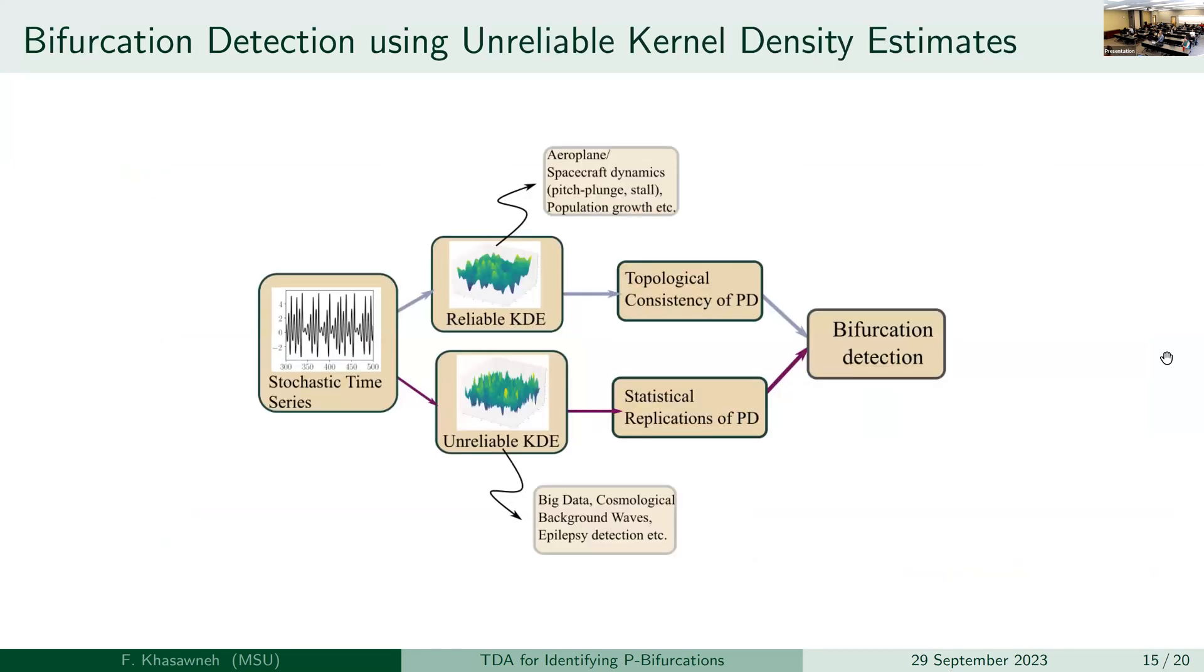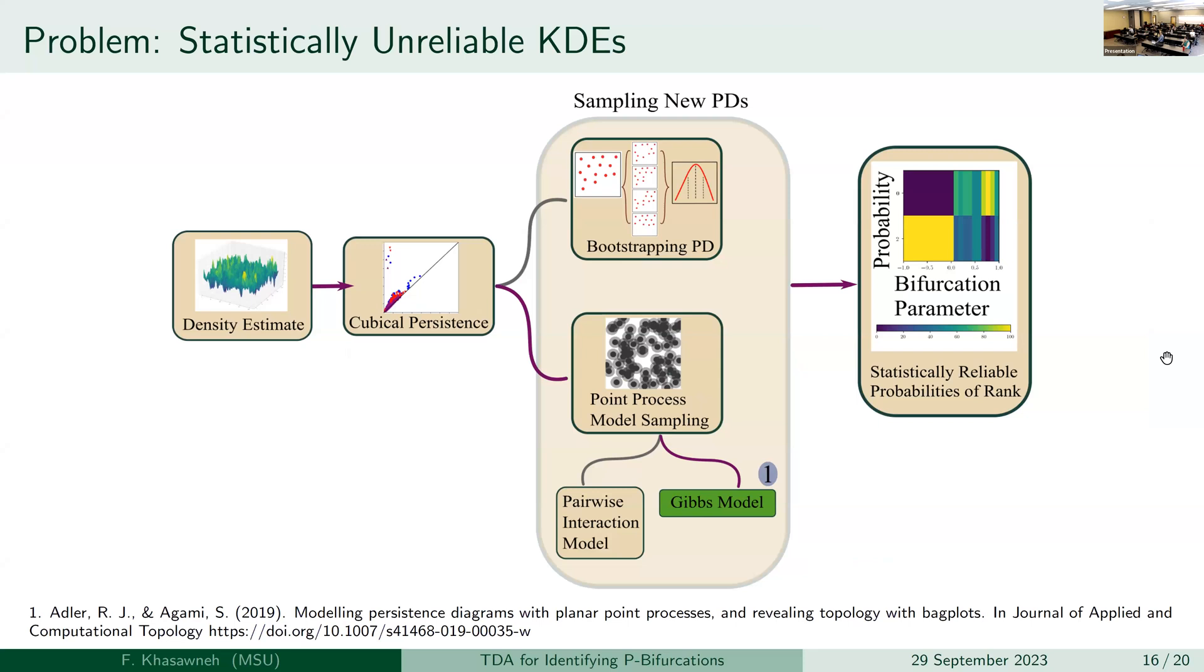Okay. So that's nice. Let's see what we can do if we have unreliable KDEs. So this, as I said, is work in progress. And so here, there are two methods that we started by looking at. One is bootstrapping the persistence diagrams. And the other one is to treat persistence diagrams like point processes and try to replicate the persistence diagrams, get more realizations of the persistence diagrams, as was done in this paper by Adler and Agami, where they model persistence diagrams as Gibbs processes. And so that's the one that I will be talking about today.